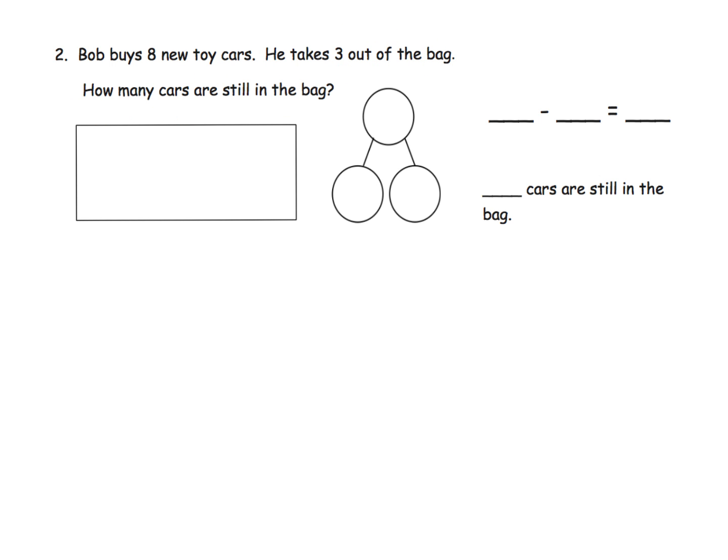So let's draw that. I'm going to use dots to represent the cars. So 1, 2, 3, 4, 5, 6, 7, 8. And I want you to notice I am trying to do this in the 10-frame style, 5 and 5. And it says he takes 3 out of the bag. So that means I'm going to use my little red and I'm going to cross off 3. So 1, 2, 3. And how many are still in the bag? Well, we've got the 5 right here that are still in the bag.